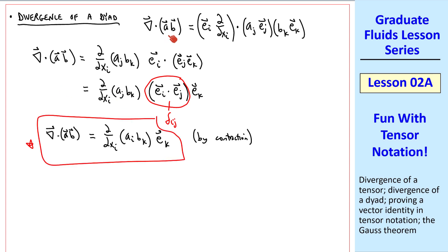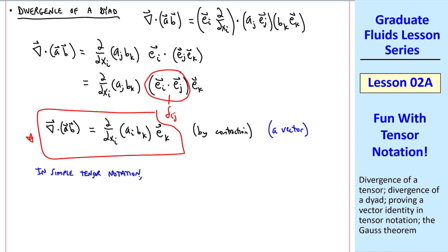Since a dyad is a second-order tensor, this divergence gives us a vector as indicated by this e. In simple tensor notation, del dot ab is represented as del del xi, ai bk, where again we've simply dropped the unit vector ek. The ek, by the way, is implied by this free index k.